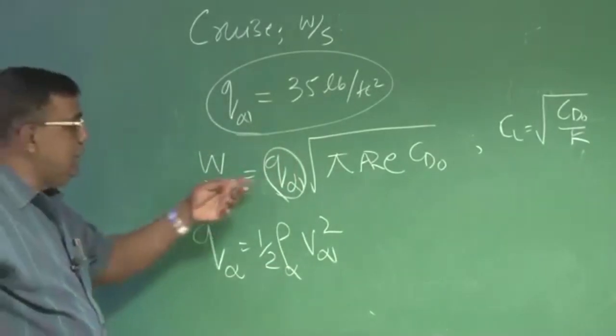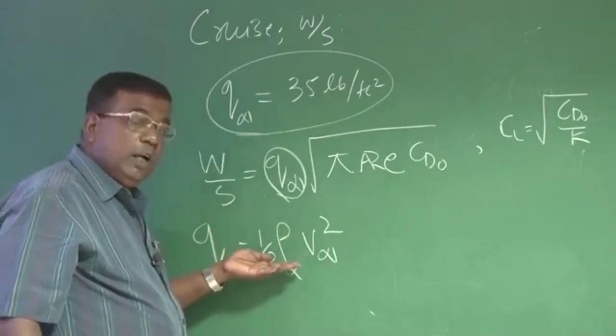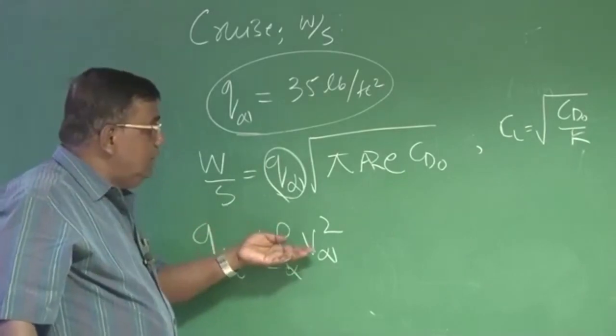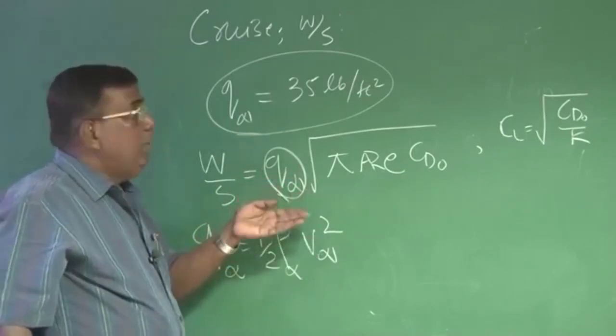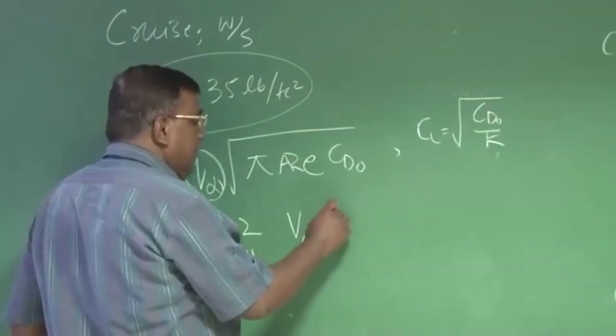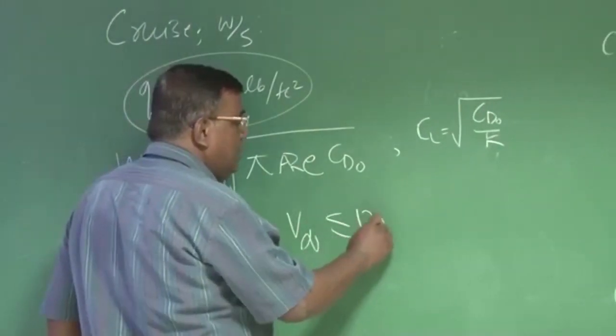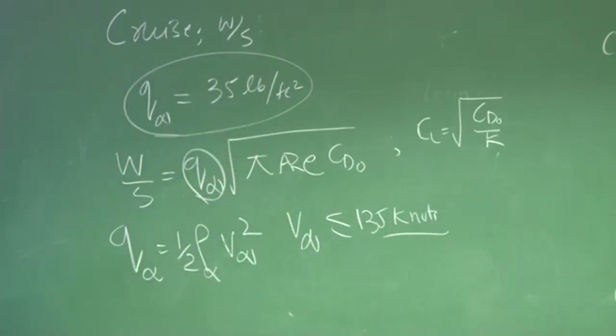But then for speed, you know that for speed, maximum is 135 knots, and we are trying to evaluate cruise at around that speed. So that's the problem.